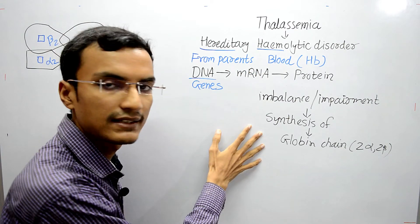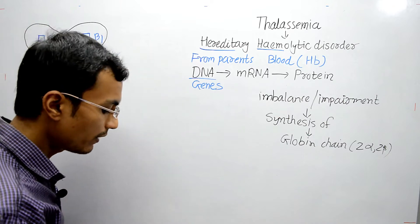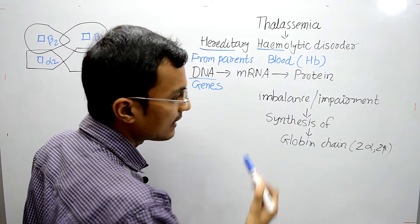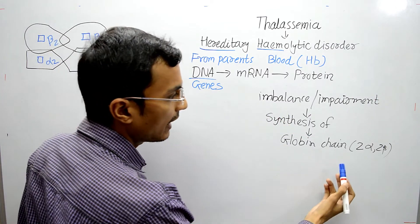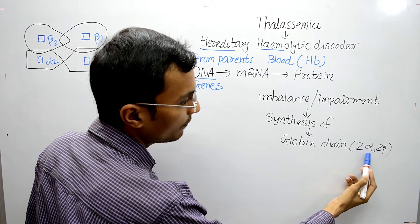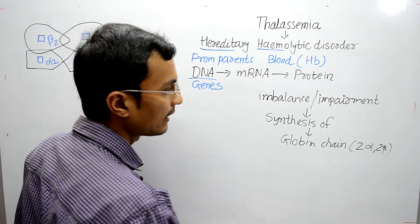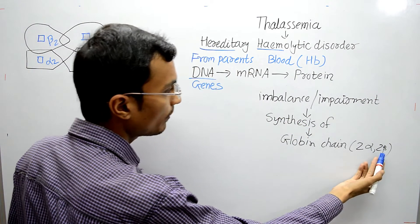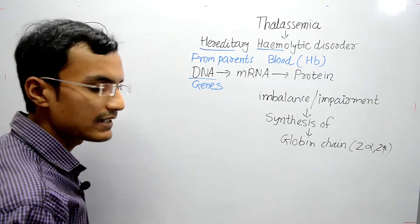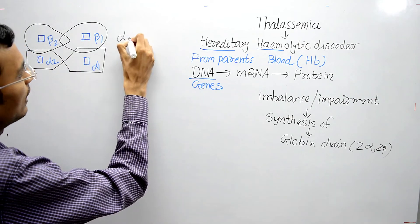If there is some imbalance in the synthesis of globin chains, it is known as Thalassemia. According to which chain synthesis is imbalanced, Thalassemia are of different types. If Alpha chain synthesis is imbalanced it is known as Alpha Thalassemia, and if Beta globin chain synthesis is impaired it is known as Beta Thalassemia. Now let's see about Alpha Thalassemia in this video.